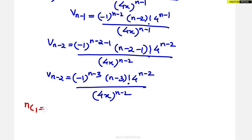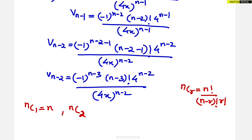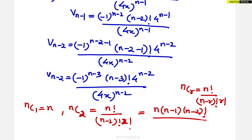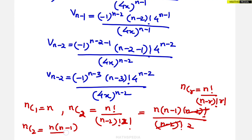nC1 is always n. For nC2, use the formula nCr = n! / [(n-r)! × r!]. So nC2 = n! / [(n-2)! × 2!]. Since n! = n(n-1)(n-2)! the (n-2)! cancels, and 2! = 2, giving nC2 = n(n-1)/2.